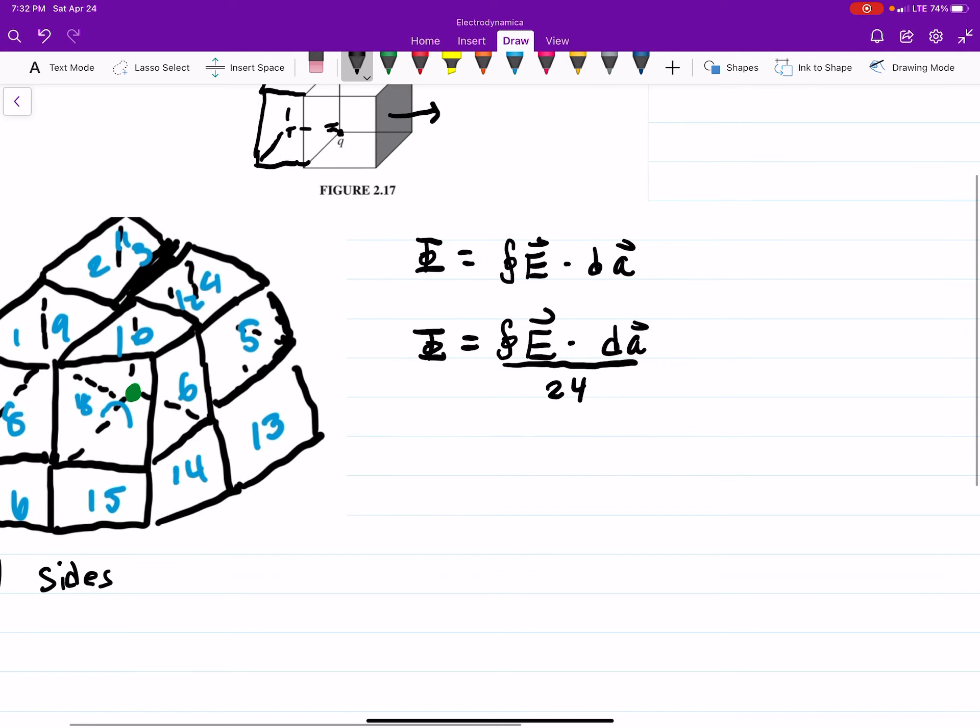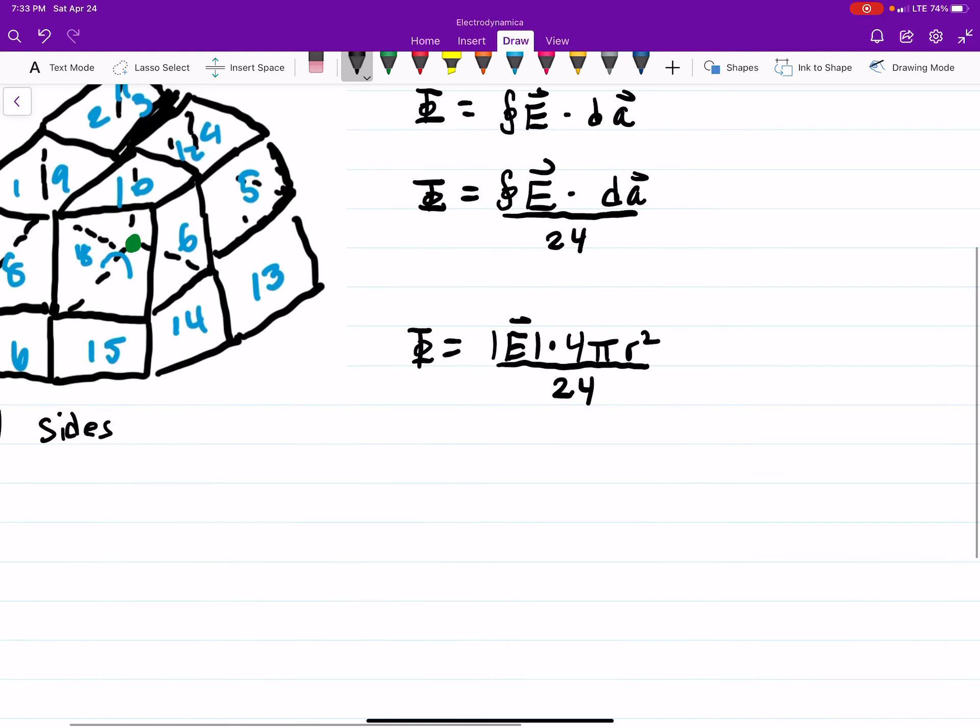And the E field for a point charge, because essentially what we'll get is the flux is equal to the magnitude of your E field times 4πr² over 24. And the magnitude of the electric field from just a point charge, which is what we have here, will be the charge over 4πε₀r².